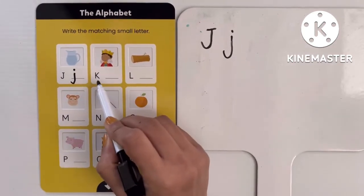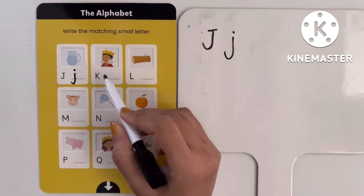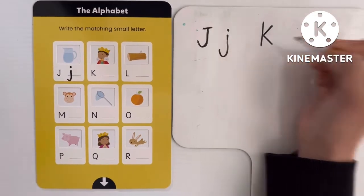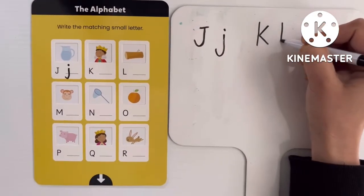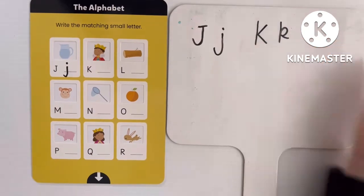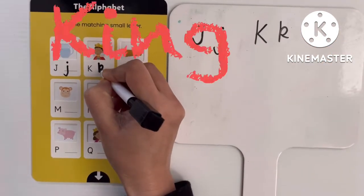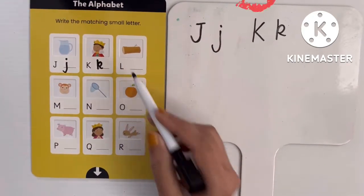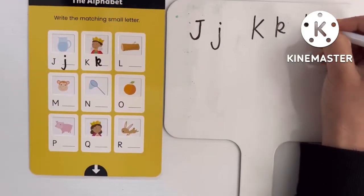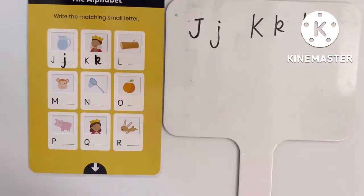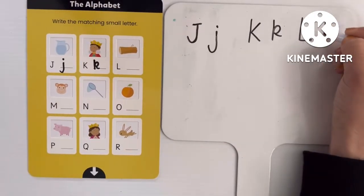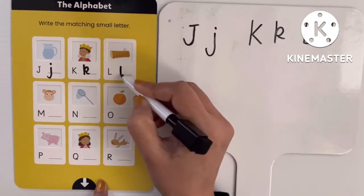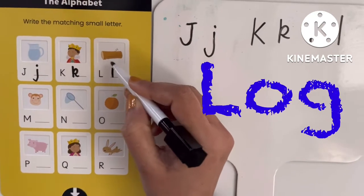Next, K — K for king. In uppercase K will be like this, and in lowercase we write: k. K for king. Next, L — L for log. In uppercase L we write like this, and lowercase L we write like this. So this is lowercase L — L means log.